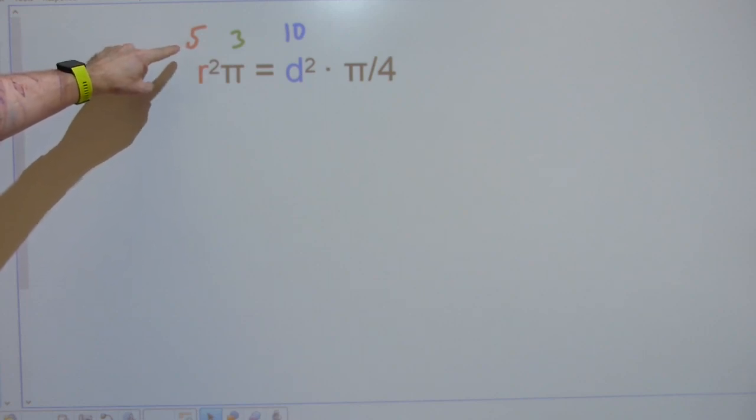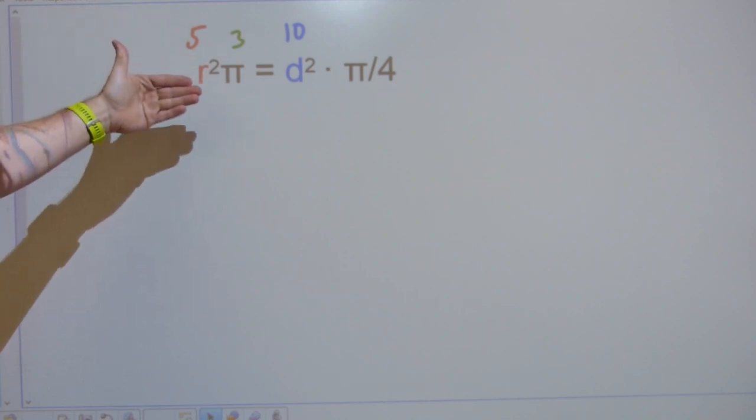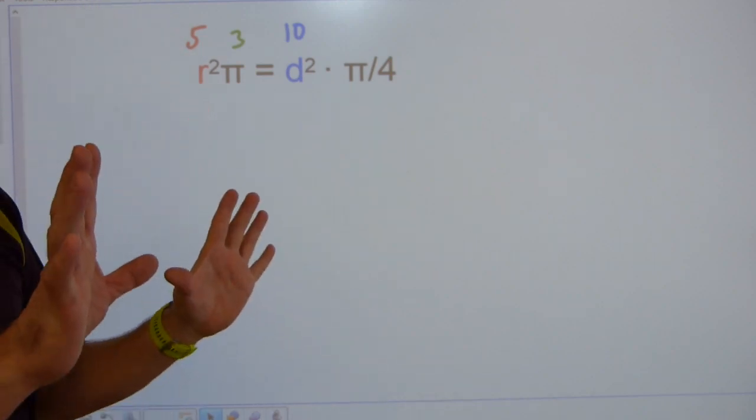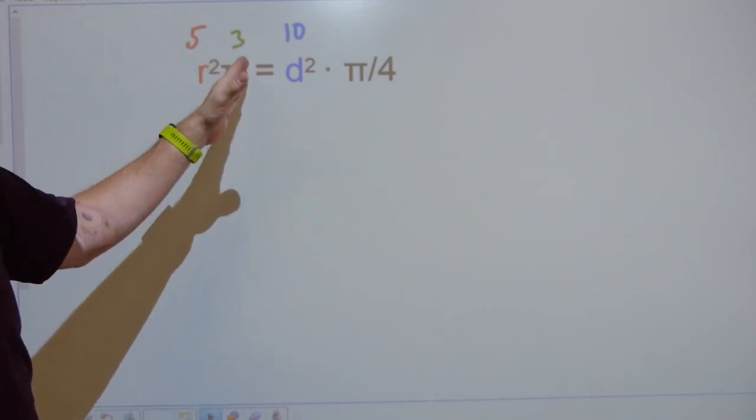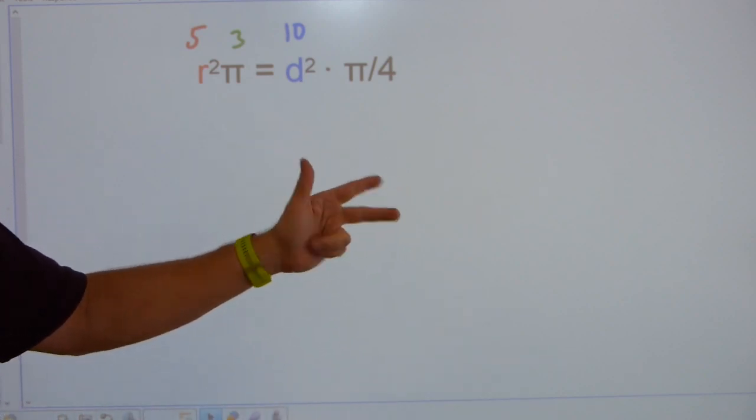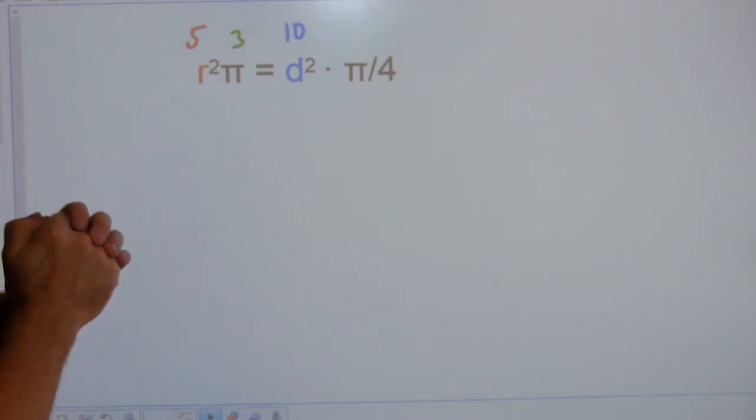So, the radius squared, 5, 5 times 5, because that's what squaring means, that you times it by itself. 5 times 5 is 25, keep the 25 in your head. 25 times 3, 25, 50, 75. So, this side of the equation is 75.